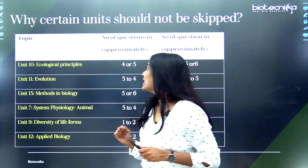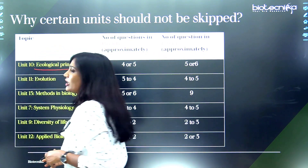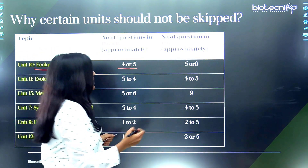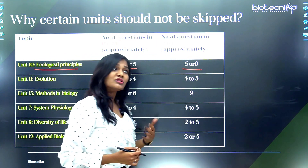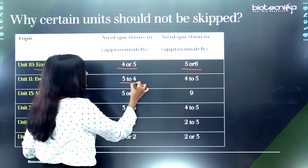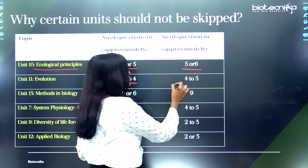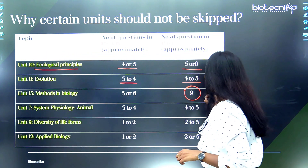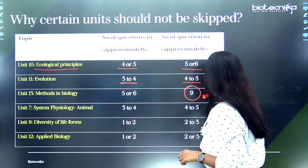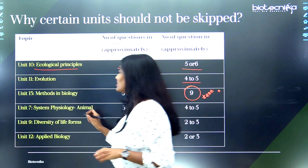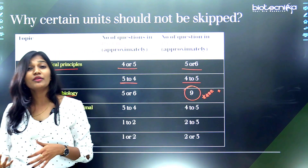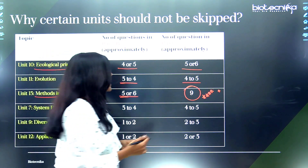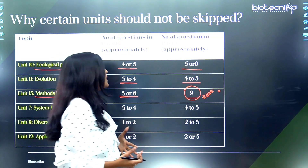Unit ten — ecology — has four to five questions in Part B and five to six questions in Part C. Evolution gives three to four questions in Part B and four to five in Part C. The most important chapter — methods in biology — has five to six questions in Part B and approximately eight to ten questions in Part C, making it the highest-scoring unit with its application-oriented questions.